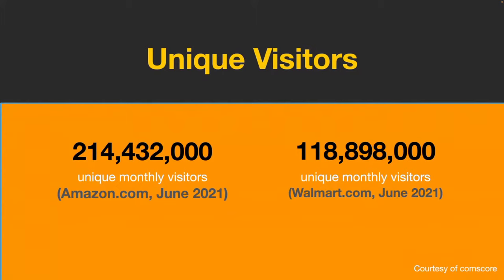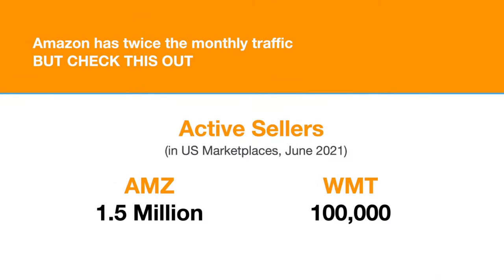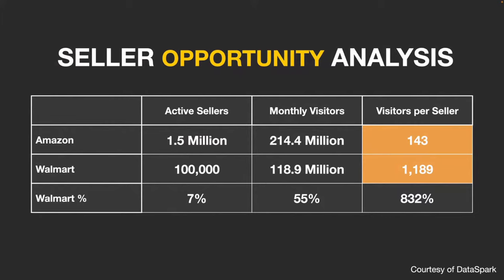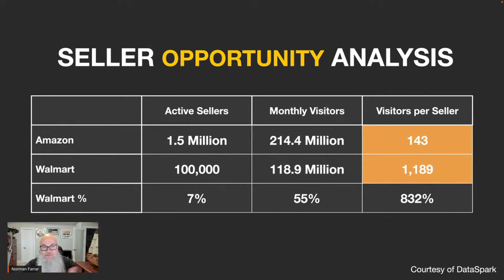Here's a number I really like: unique visitors. Amazon gets 214 million unique visitors per month with 1.5 million active sellers. Walmart gets 118 million unique visitors per month with only 100,000 active sellers. When you compare the ratio, that's 143 unique visitors per seller on Amazon compared to 1,100 on Walmart — an 832% difference. These numbers are incredible.